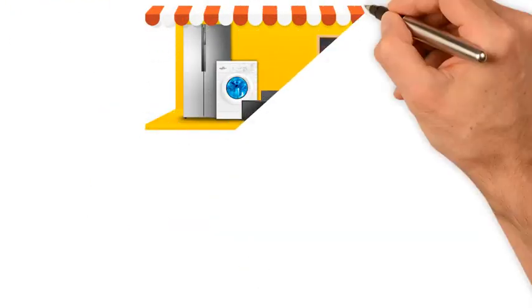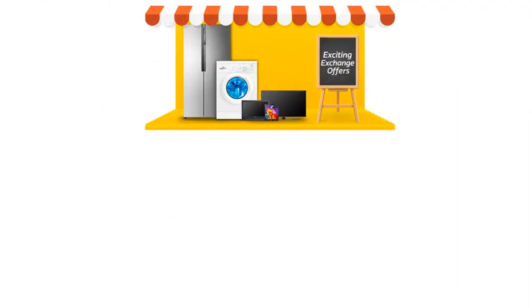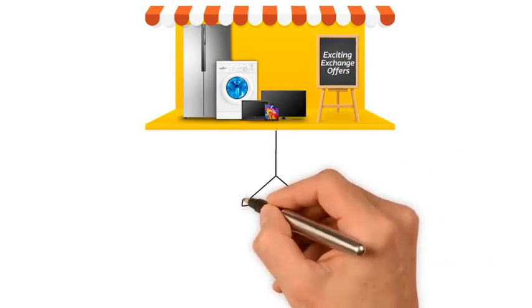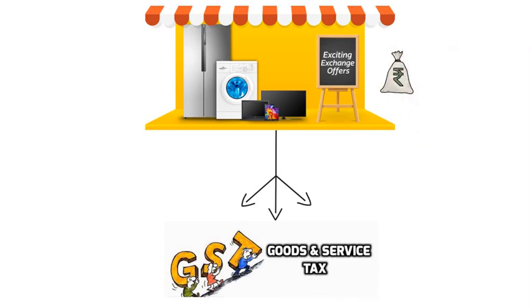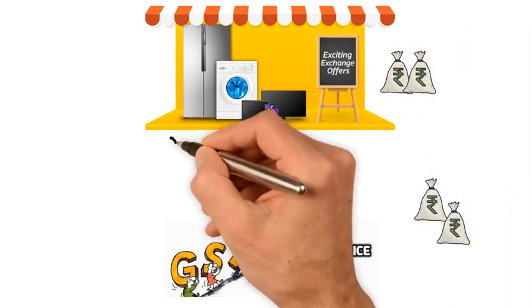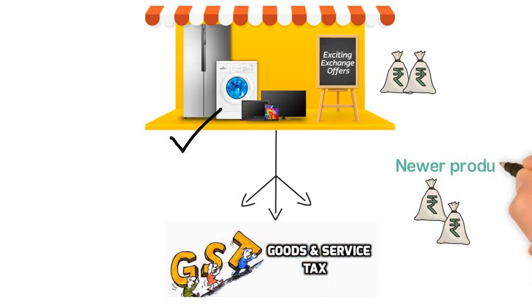Exchange offers on mobiles, televisions and refrigerators are going to attract a goods and services tax on the original price of the product and the reduction in the newer product will not be considered.